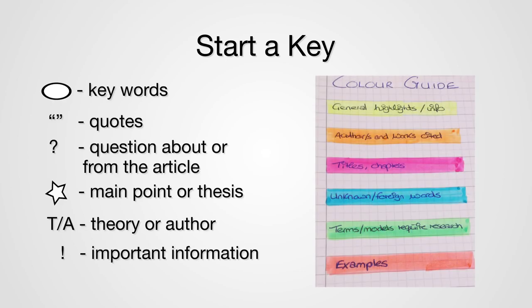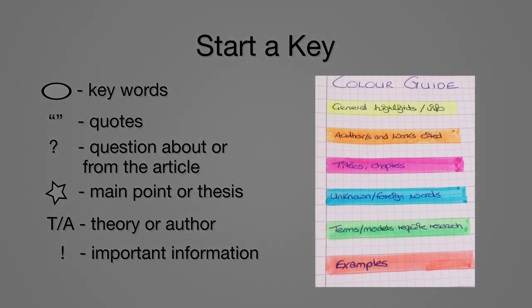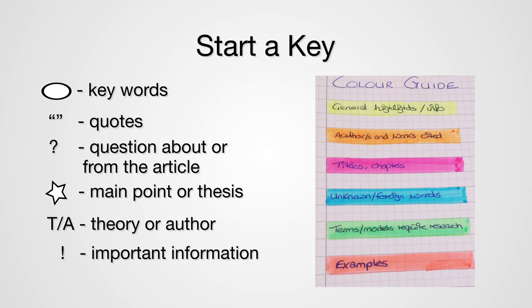The next step is to start a key. The key is the list of symbols or colors you use to code your notes. By sticking to a standard set of elements, you can make marks on the article that you translate or explain in your separate note document. If you prefer a color coding system, by all means do what works for you. Here, I'm offering a series of symbols to represent helpful annotations in the articles you read.